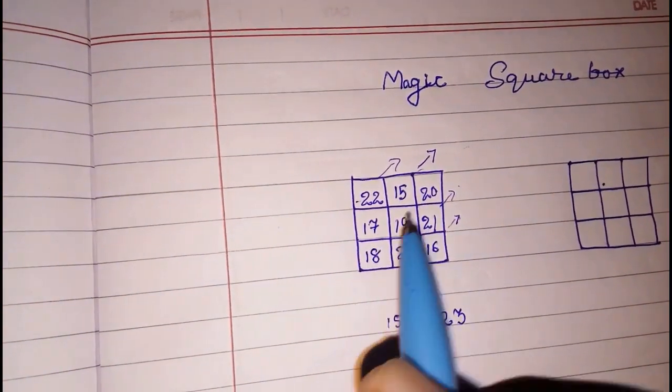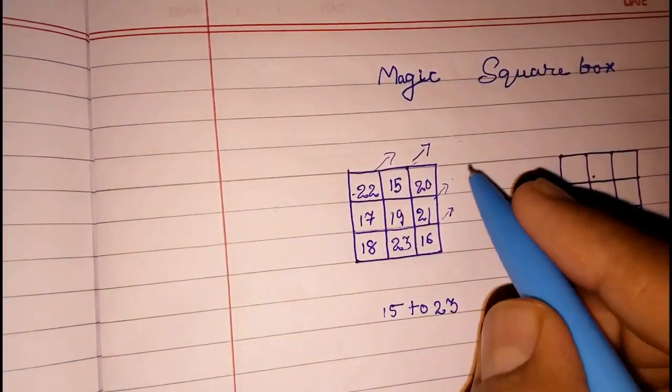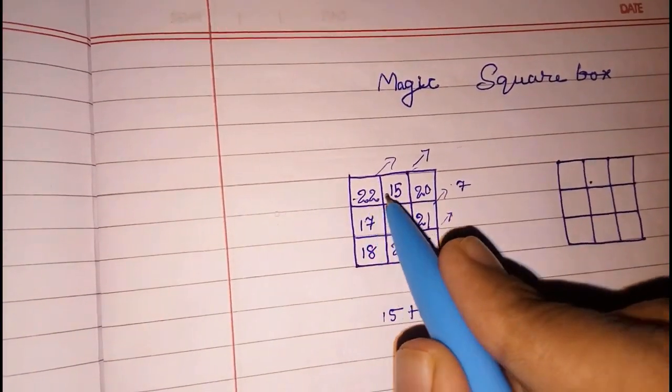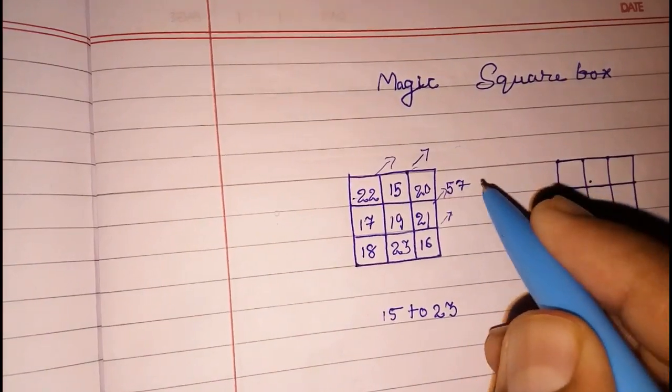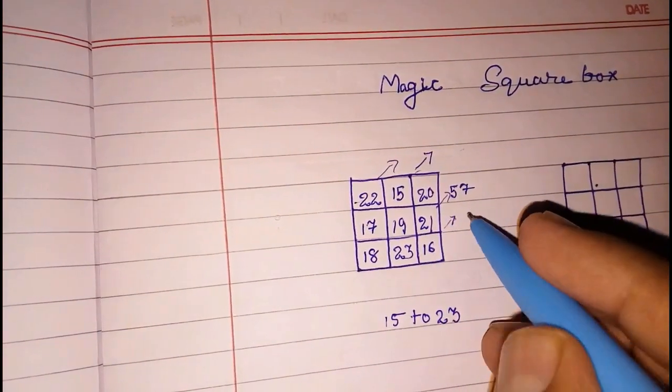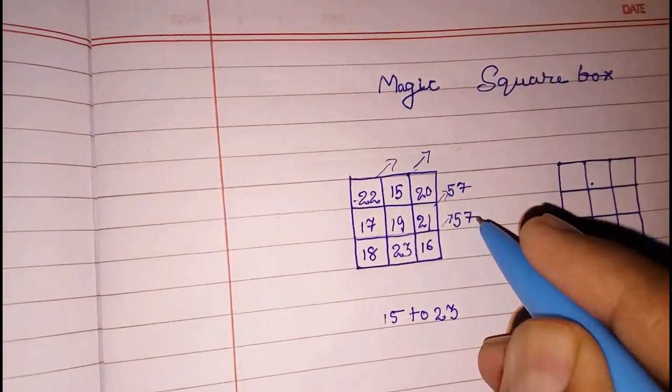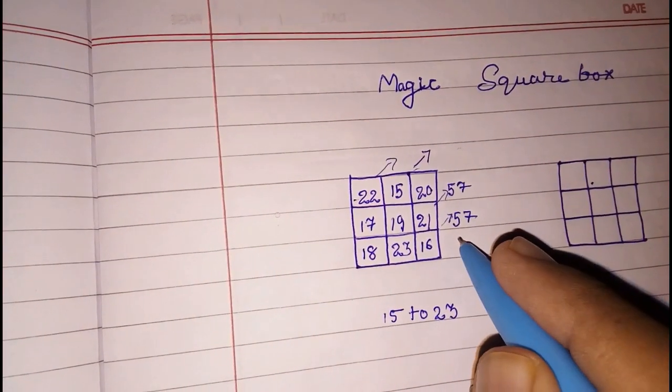Now if you add this one, what will be the sum? 7 and 3, 4, 57. Look here also, 9, 10, 57, here also 57.